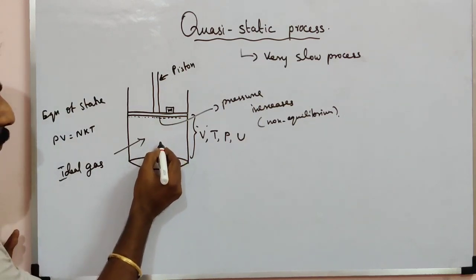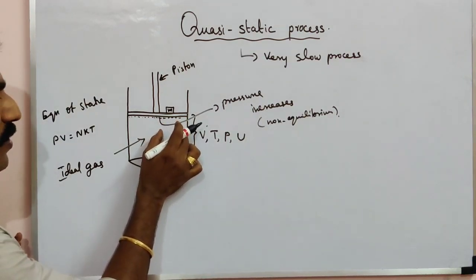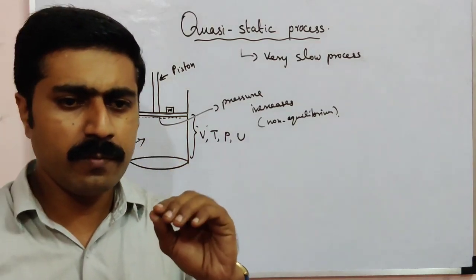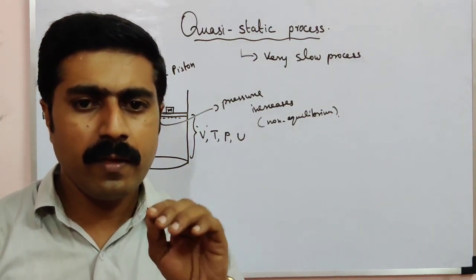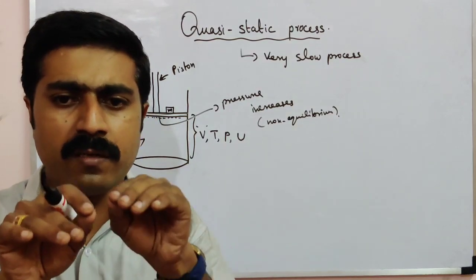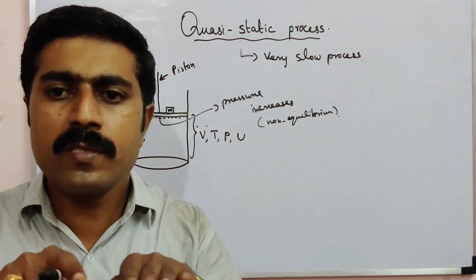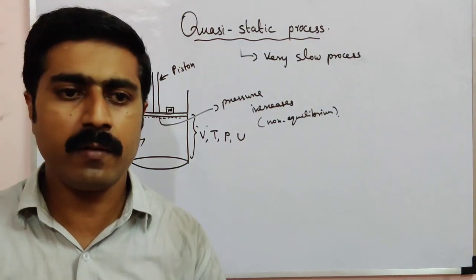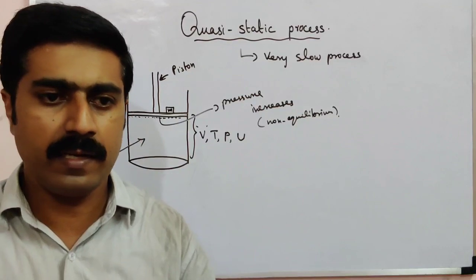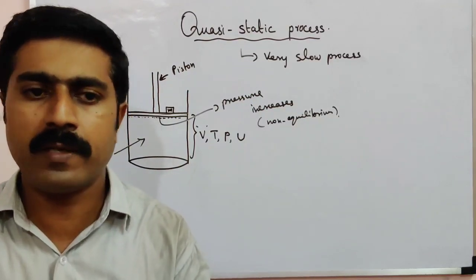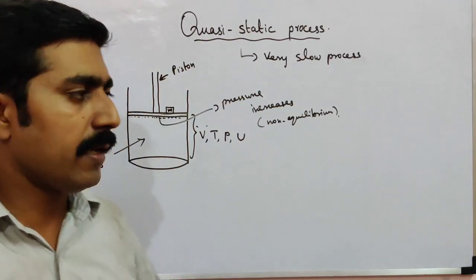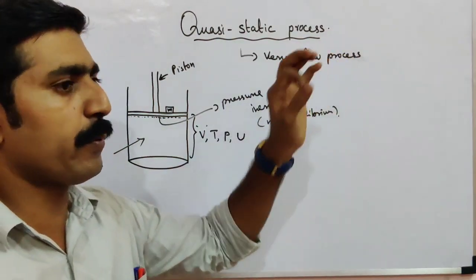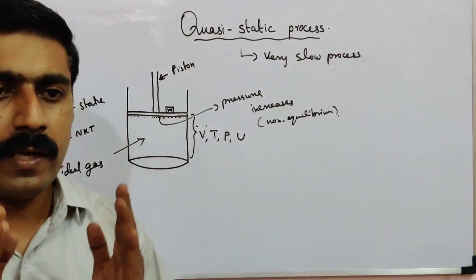So, step by step, in each equilibrium state, the pressure and volume may vary a little bit, but if the variation is very small, there is almost an equilibrium at every stage. When the process is slow enough to maintain equilibrium at every step, that process is called a quasi-static process — a very slow process.